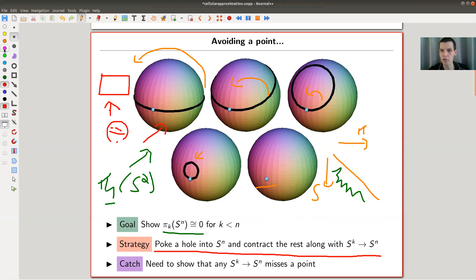The catch here is, of course, you need to make sure that all of my loops in this example miss my South Pole, right? Because I want to poke a hole in there and I just don't want to poke straight through a loop—that would be bad. So I need to push the loop a little bit away from the South Pole, and then I'm good.